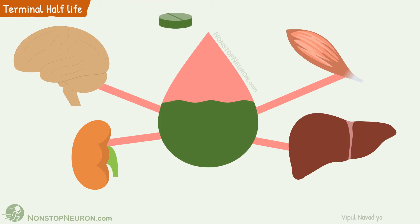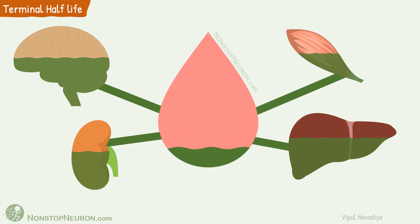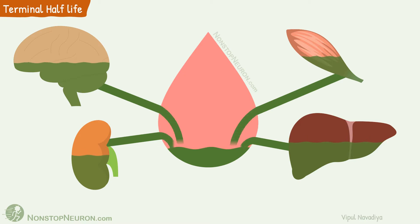Most of the times, we give multiple doses of drugs to maintain steady-state plasma concentration. What happens is over a period of time, many drugs accumulate in various body tissues. Now when we stop giving the drug, initially the concentration drops as expected. With elimination, eventually a point is reached where the drug starts diffusing back into the blood from where it was accumulated.